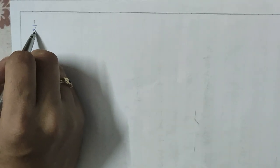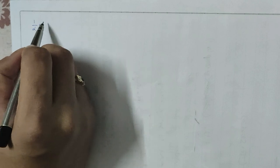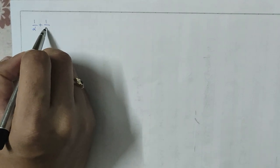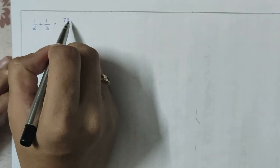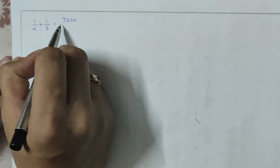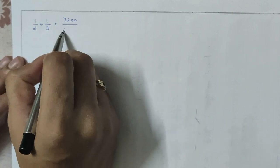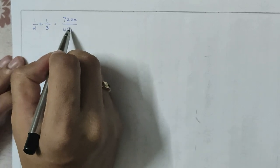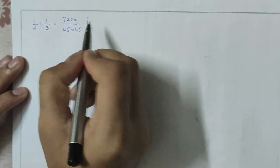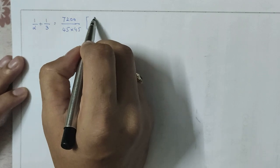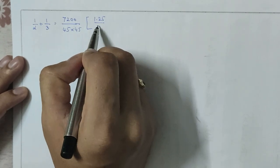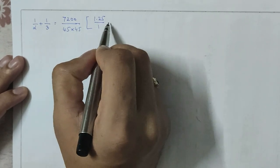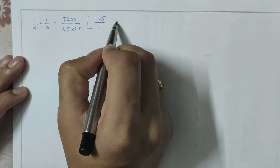Substituting into the formula: 1/α + 1/3 = 7200 × D divided by Vm². With Vm = 45, we have Vm² = 45 × 45. And Vm = 1.25 × Va.